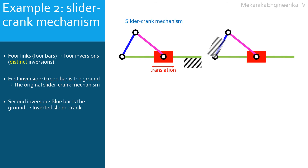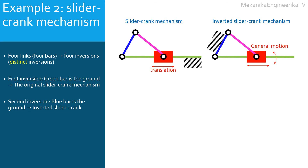It is also possible to ground the blue bar, the bar opposite to the slider. This is the most popular inversion of the slider-crank mechanism, widely known as the inverted slider-crank mechanism. In this inversion, the magenta and the green bars can complete a 360-degree rotation. The slider is translating along the green bar. The green bar is not static — it is rotating. Thus the slider has a general motion.